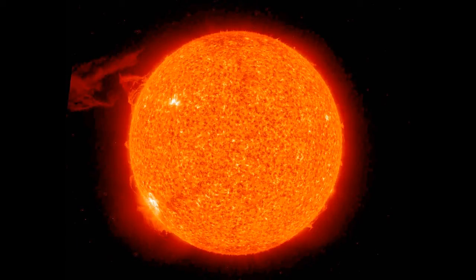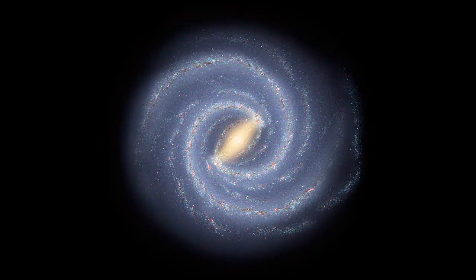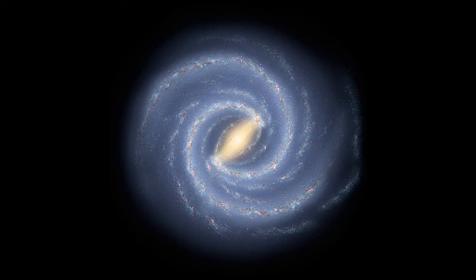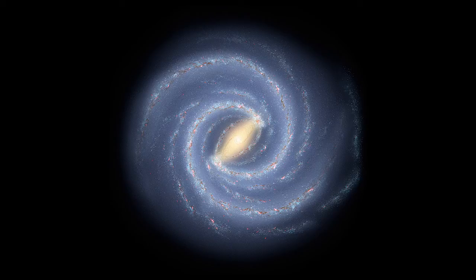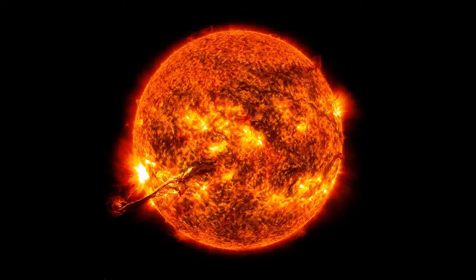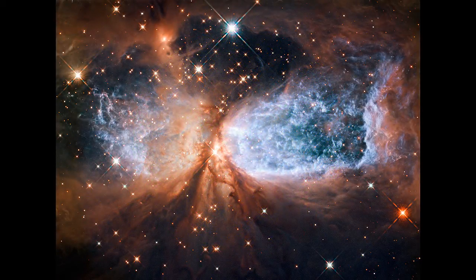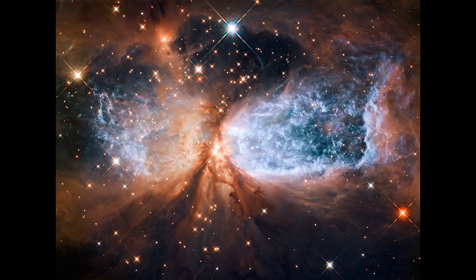Let them be for lights in the firmament of the heaven, to give light upon the earth. And it was so. And God made two great lights, the greater light to rule the day, and the lesser light to rule the night. He made the stars also. And God set them in the firmament of the heaven, to give light upon the earth. And to rule over the day and over the night, and to divide the light from the darkness. And God saw that it was good.